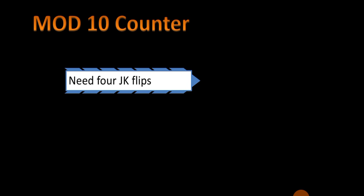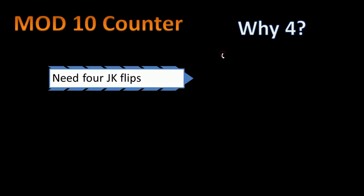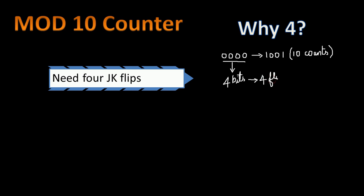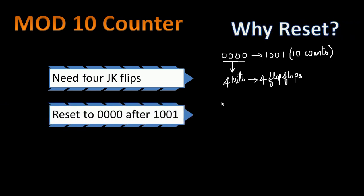To build a mod 10 counter we need 4 JK flip-flops. The count should go from 0000 to 1001, that is from 0 to 9. To represent 0 to 9 we need 4 bits, and to store 1 bit of data we need one flip-flop. So with 4 bits we need 4 flip-flops to make sure the count goes from 0 to 9 and then resets to 0000 after the count reaches 1001.